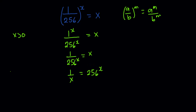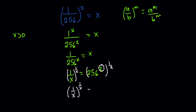Now I'm going to find a way of removing the exponent of 256, so I'm going to raise both sides to the power of 1/x. This gives me (1/x)^(1/x) = 256.